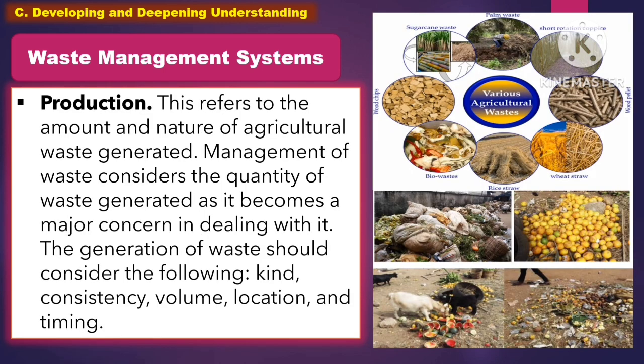Production refers to the amount and nature of agricultural waste generated. Management of waste considers the quantity of waste generated as it becomes a major concern in dealing with it. The generation of waste should consider the following: the kind, consistency, volume, location, and timing.